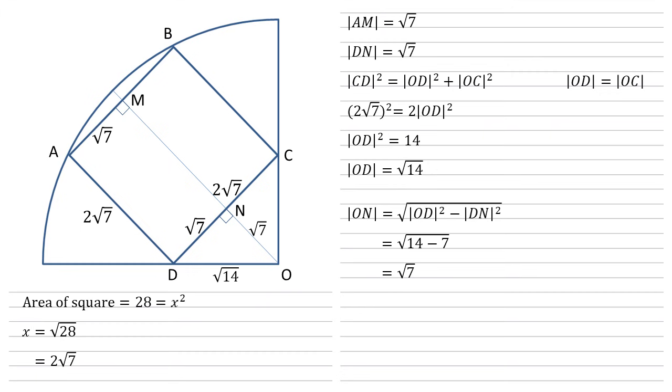We can now use this to work out the length of OM, our line that we fitted in, because OM is just ON plus NM. Now NM, as that's right angles to our square, we know that that must be the size of the square, so 2 root 7. And we know that ON is root 7, so the line OM's total length is 3 root 7.